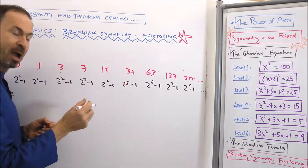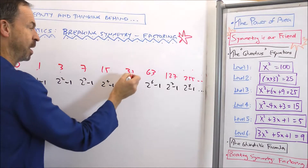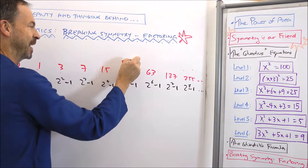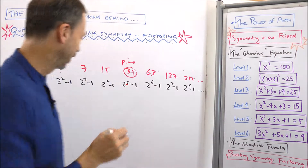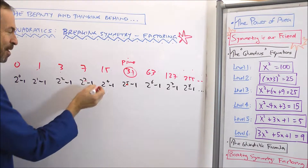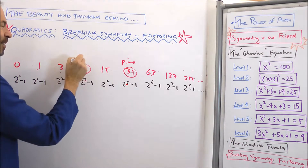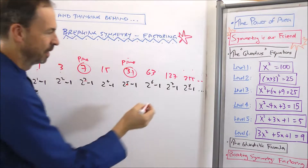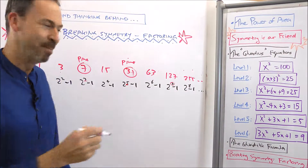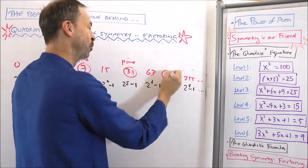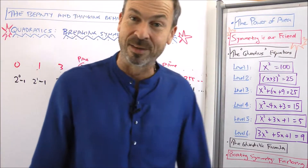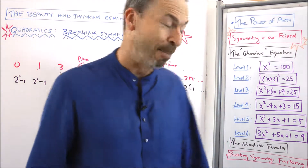2 to the 5th — 2 to the prime number — take away 1, is 31. That's prime. Pick another prime number like 3: 2 to the 3 minus 1 is 7, it's prime. 7 is prime. 2 to the 7 minus 1 is 127, and it turns out 127 is a prime number.